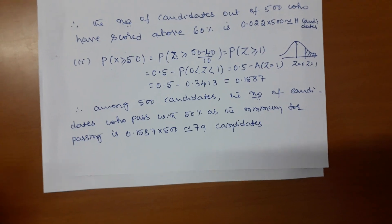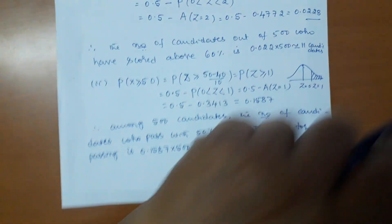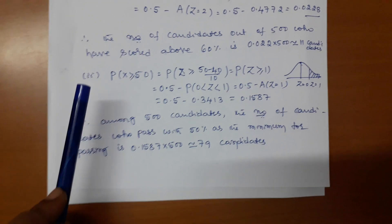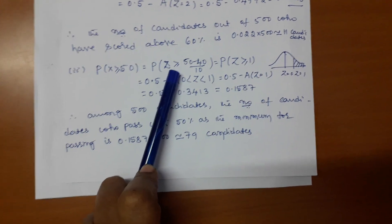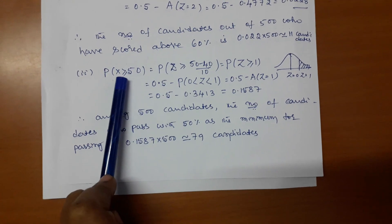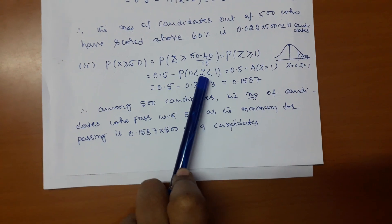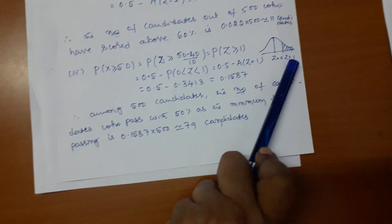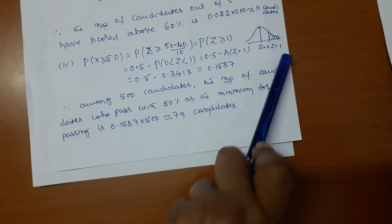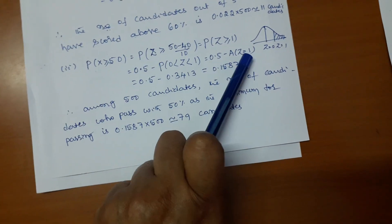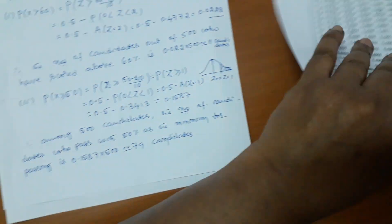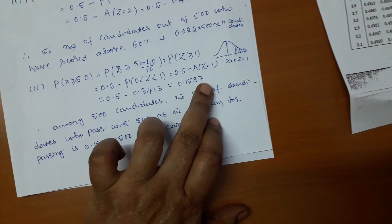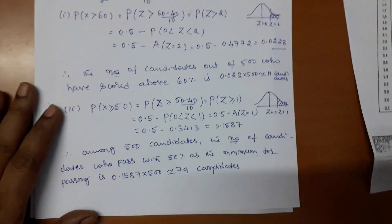If 50 is fixed as the minimum, it is enough to find P(X ≥ 50). Converting X to Z: (50 − 40)/10 gives P(Z ≥ 1). This area equals 0.5 − P(0 < Z < 1). The area at Z = 1.00 from the table is 0.3413. Subtracting from 0.5 gives 0.5 − 0.3413 = 0.1587. Then multiply by 500 candidates.